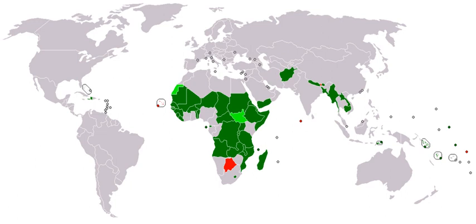The UN acknowledges that it has no established convention for the designation of developed and developing countries or areas. According to its M49 standards published in 1999, the designations 'developed' and 'developing' are intended for statistical convenience and do not necessarily express a judgment about the stage reached by a particular country in the development process. The UN implies that developing countries are those not on a tightly defined list of developed countries. In common practice, Japan in Asia, Canada and the United States in Northern America, Australia and New Zealand in Oceania, and Europe are considered developed regions or areas.